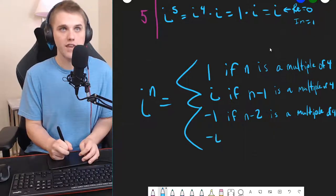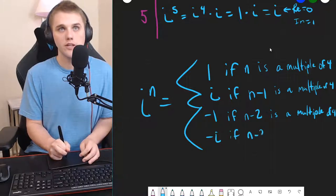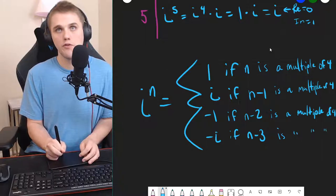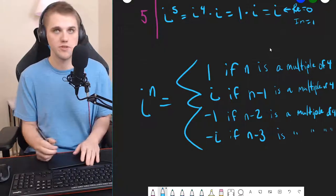And then lastly, we have negative i, if n minus 3 is a multiple of 4. And I'll just put quotation marks just to represent it. It's the same as above.